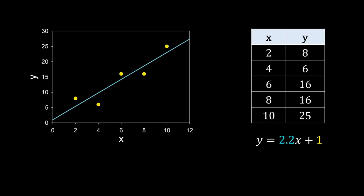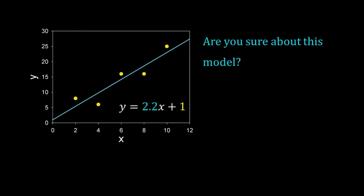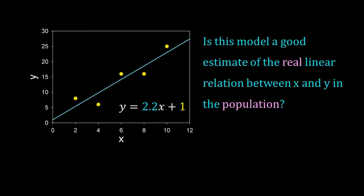We have five data points and we fitted a line by linear regression. The slope of the line is 2.2 and the intercept is 1. We also calculated the R-squared, which is equal to 0.8462. We concluded that our linear model has a quite good fit for the data. But our task of fitting a linear model does not end here — one can ask: how confident are you about this model? Is this linear equation a good estimate of the real linear relation between x and y in the population?